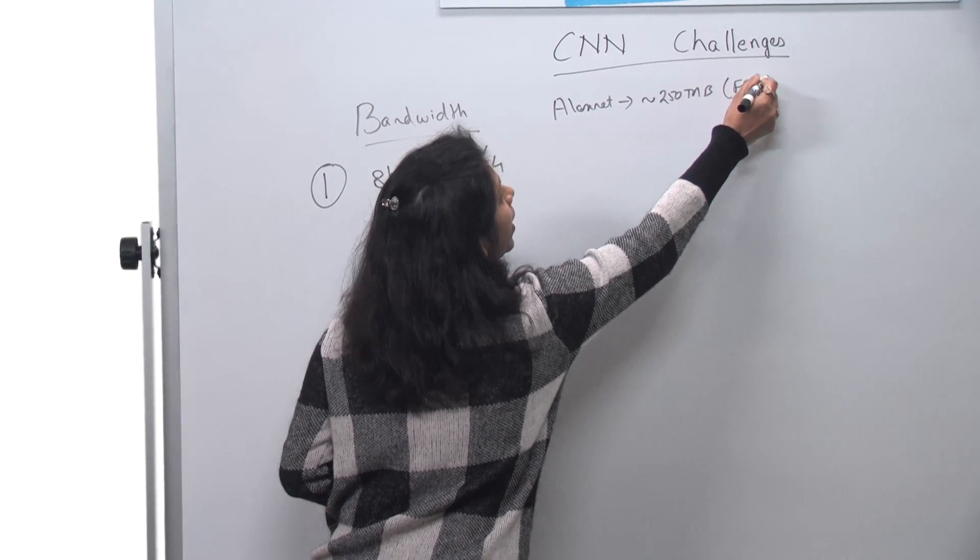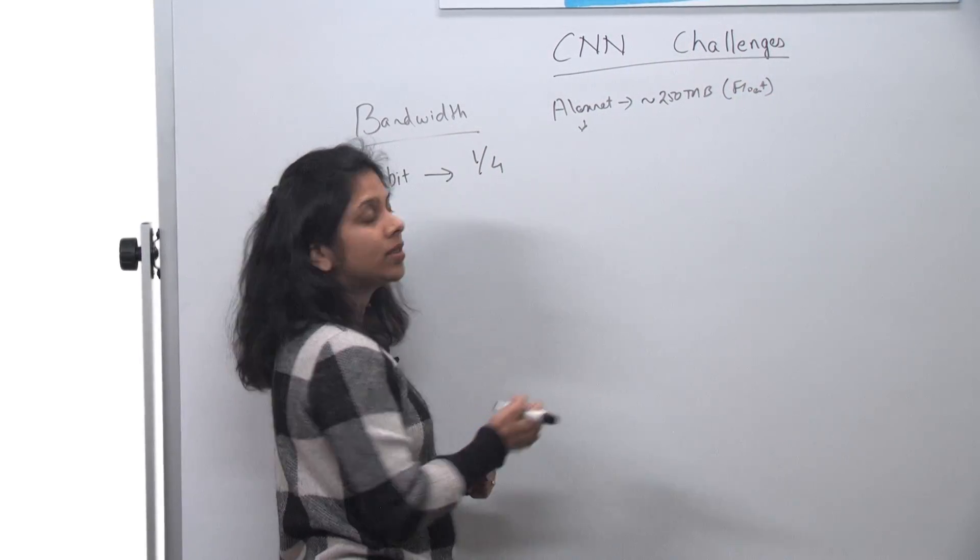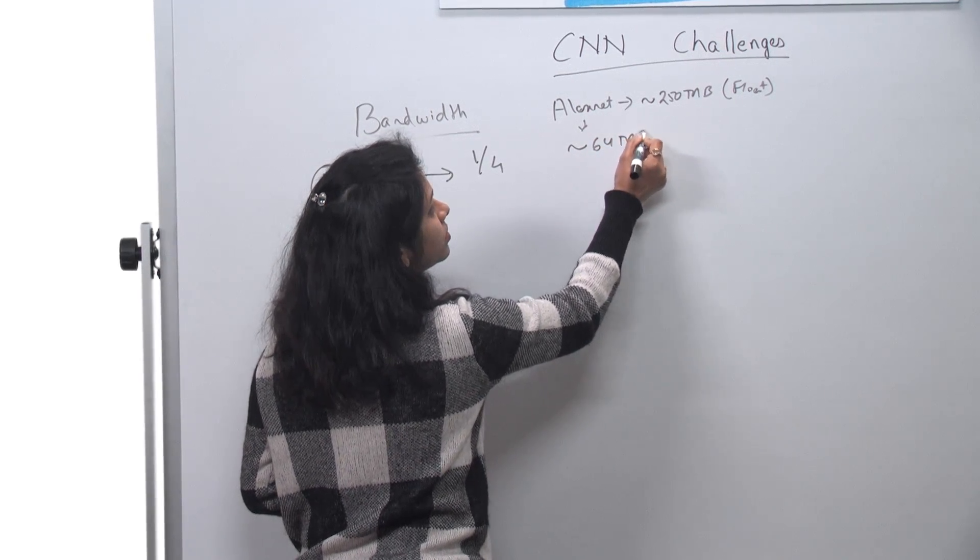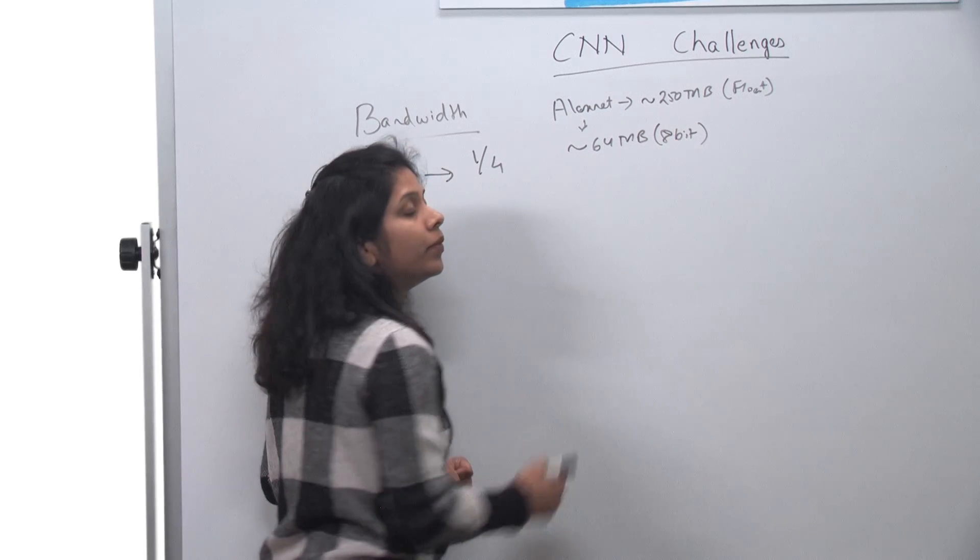So when we go down to 8-bit, we have automatically reduced it down to around 64 megabytes. So that's one thing.